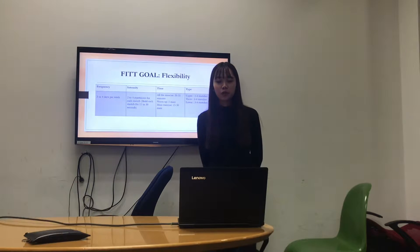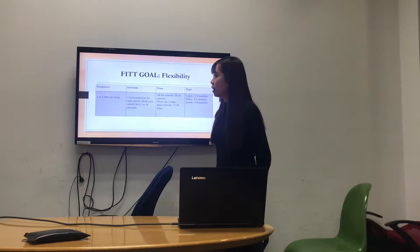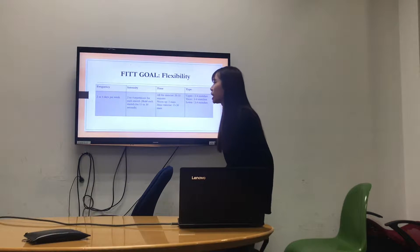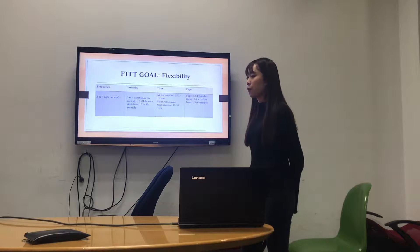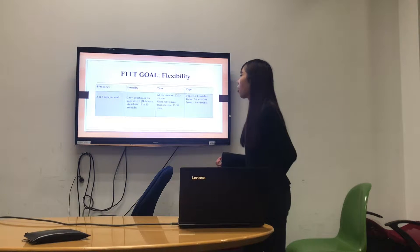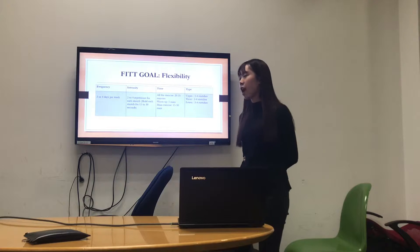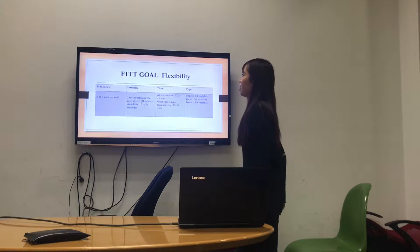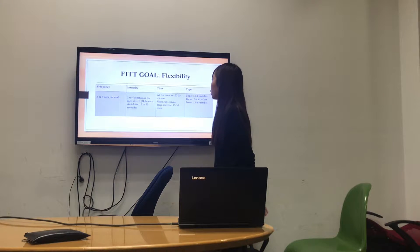Here is my FITT course feasibility. The frequency of my exercise is 3 or 4 days per week and the extent of it is 2 to 4 repetitions for each stretch, which holds each stretch from 15 to 30 minutes. The time of all the exercise is 20 to 35 minutes and the warm-up is 5 minutes. Main exercise is 15 to 30 minutes. The type of my feasibility exercise includes upper, torso, and lower.